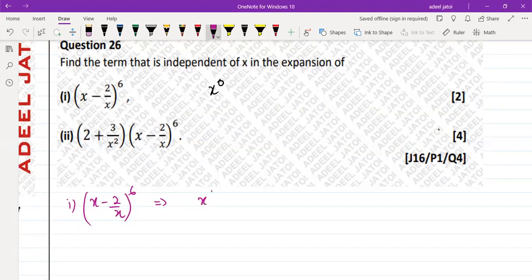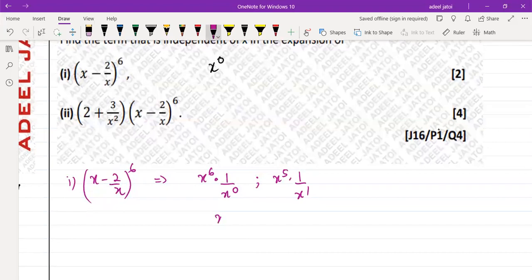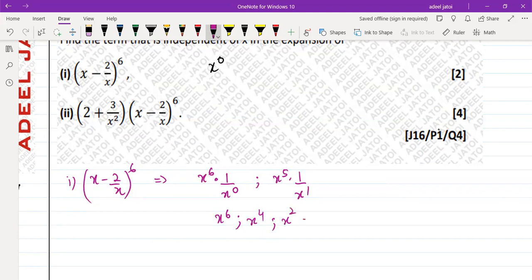So let's just do this, x to the power 6, multiply 1 upon x to the power 0, this is going to be x to the power 5, multiply 1 upon x to the power 1. So your first term is 6, your second term should be 4, then your next term should be x square, and then we will have x to the power 0.